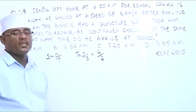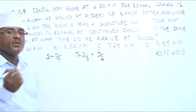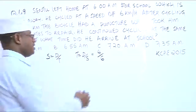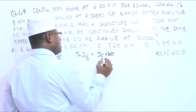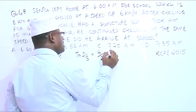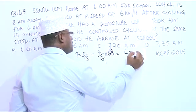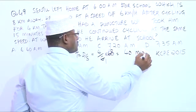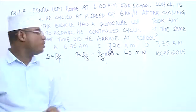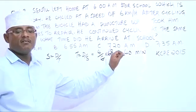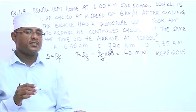This is a fraction, so let us change it to minutes. To change hours to minutes, we multiply by 60. So 4/6 multiplied by 60 gives us 40 minutes. He took 40 minutes from the starting time up to the time he had the puncture.